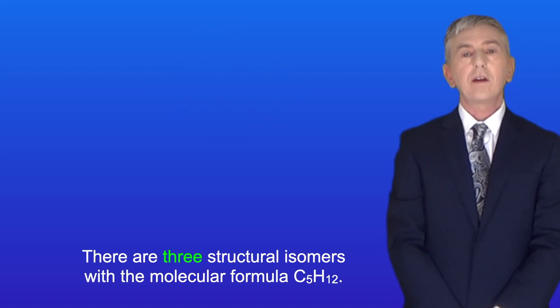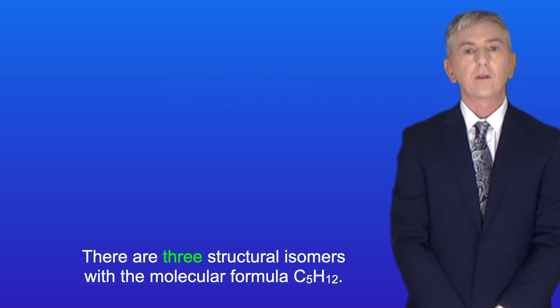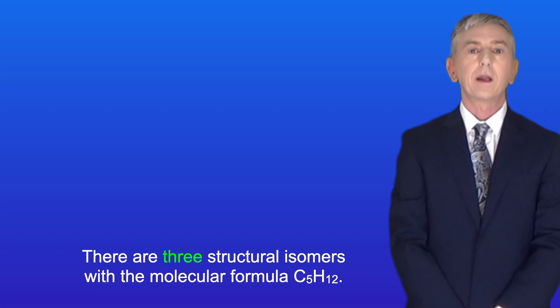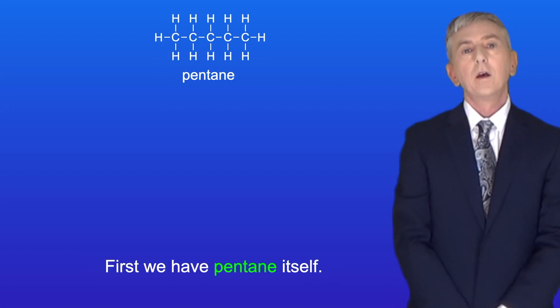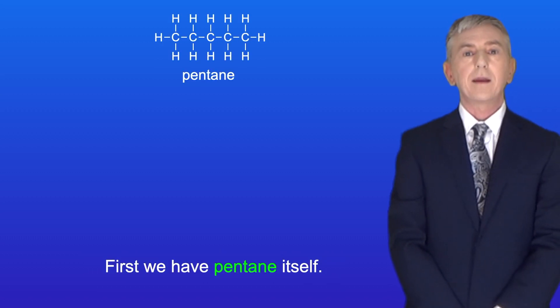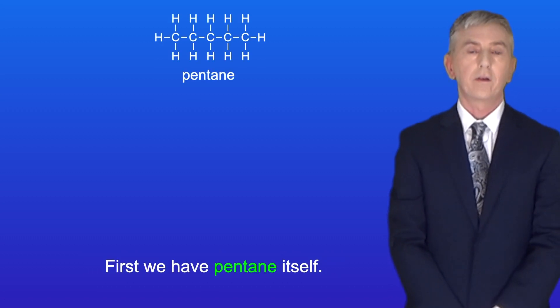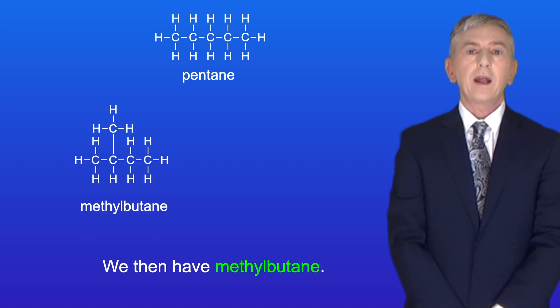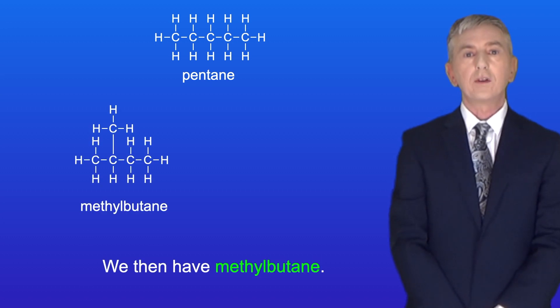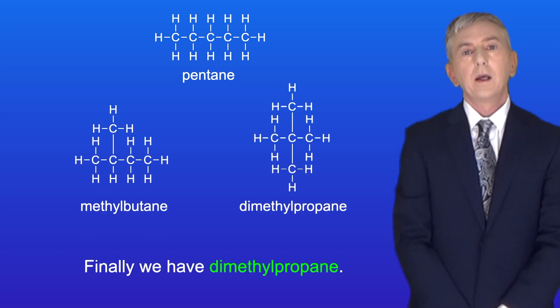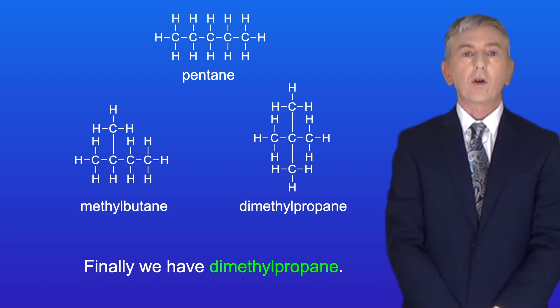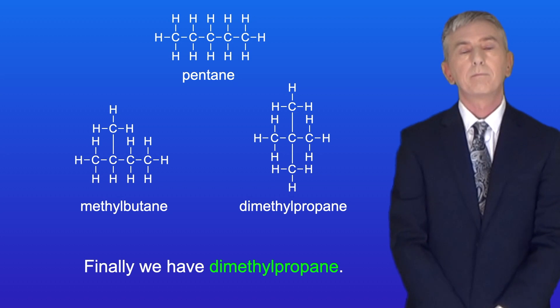There are three structural isomers with the molecular formula C5H12. First we have pentane itself, then we have methylbutane, and finally we have dimethylpropane.